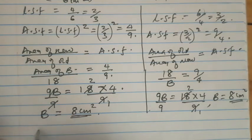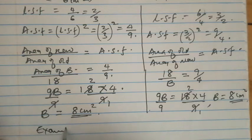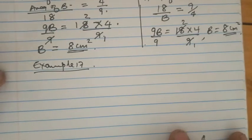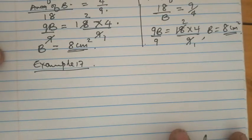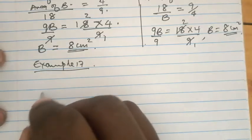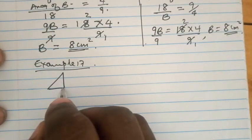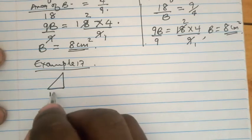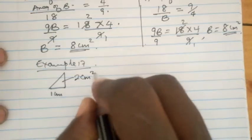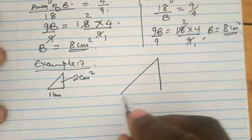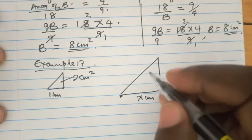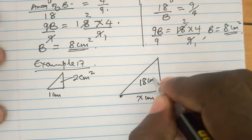Now I want to explain example 17 in the same video. In example 17, two triangles are similar with dimensions and areas as shown. One triangle has a length of 1 centimetre and an area of 2 centimetres squared. The other, bigger triangle has a dimension of x centimetres and an area of 18 centimetres squared.